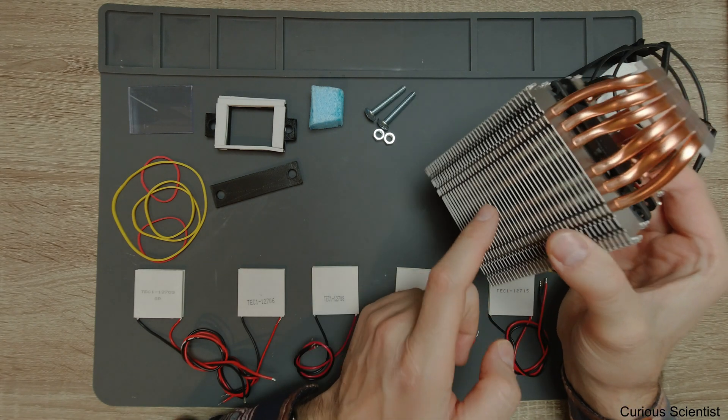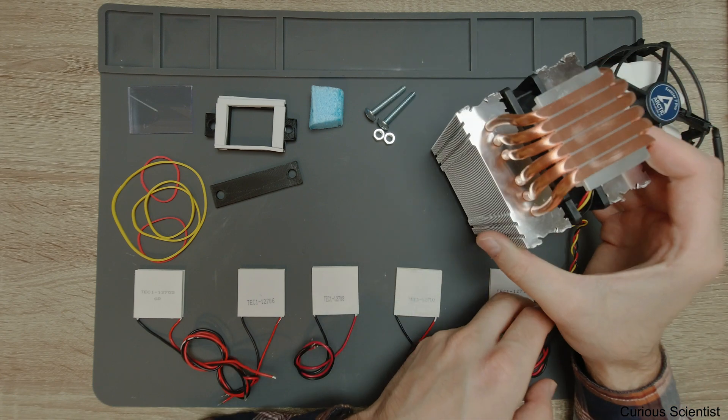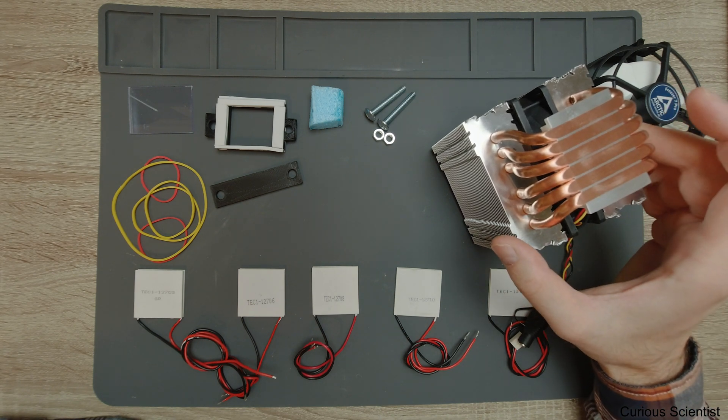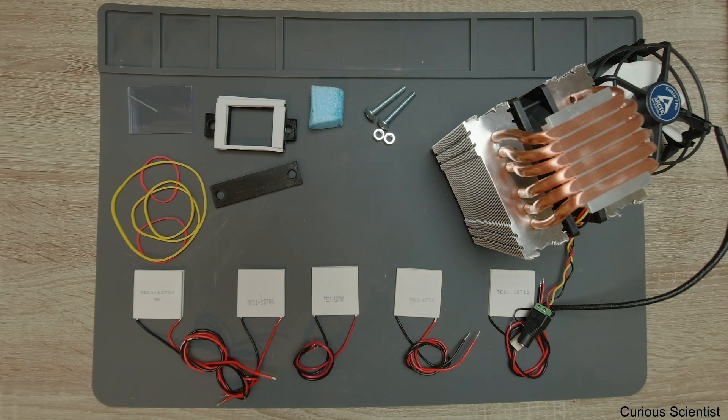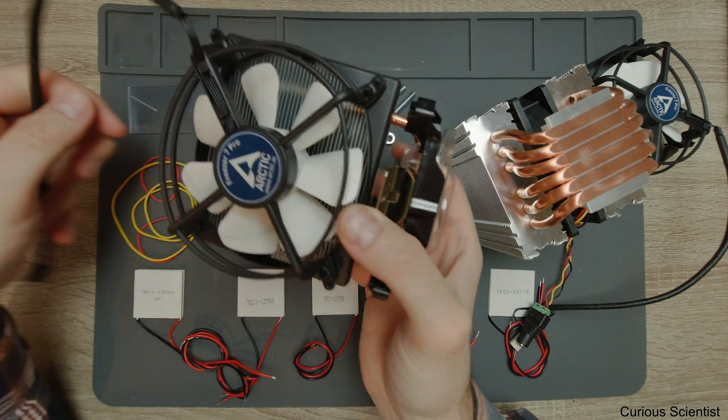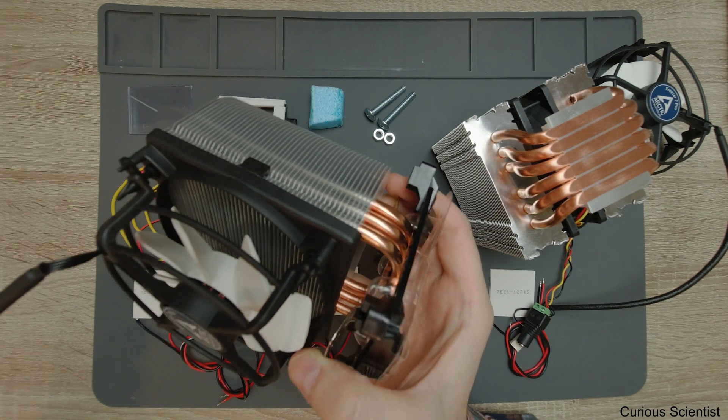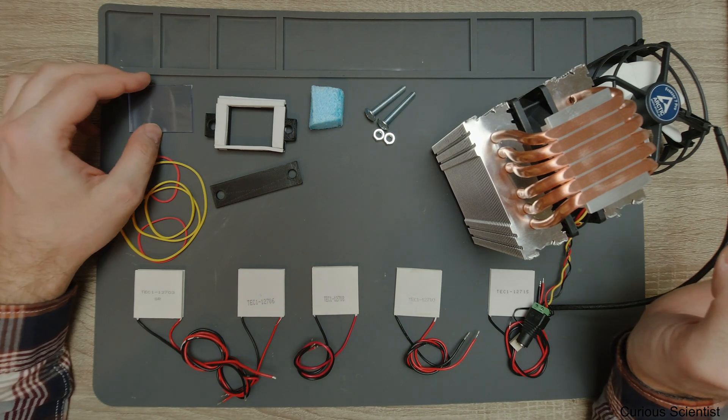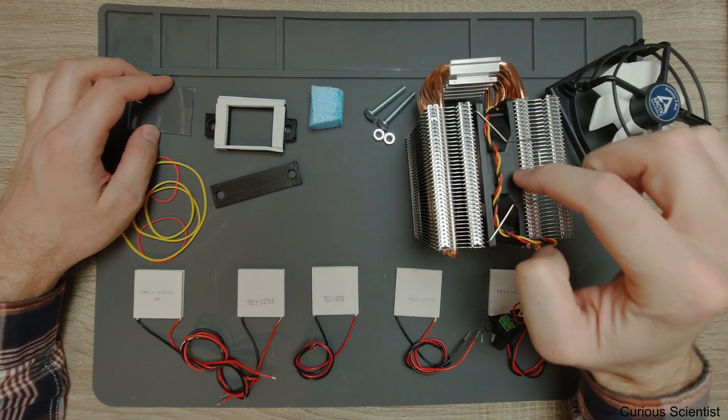I will measure the outlet temperature, so sometimes I will put a thermocouple inside these things and see what's the temperature here compared to the hot side temperature. By using this other cooler, I will measure the temperature somewhere inside to see how cold is the air getting out from that cooler.